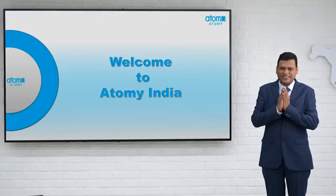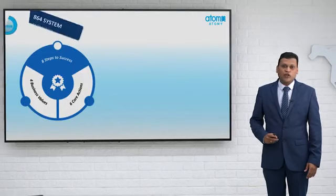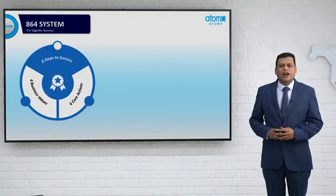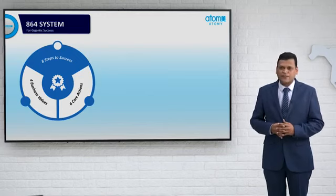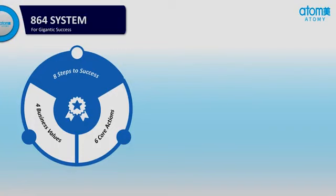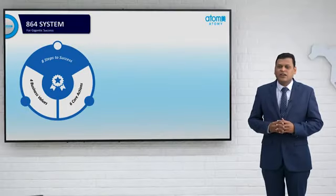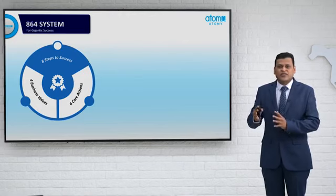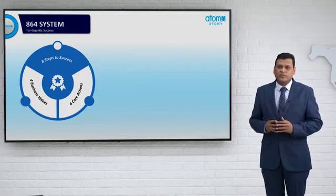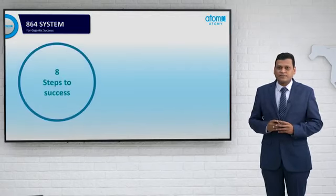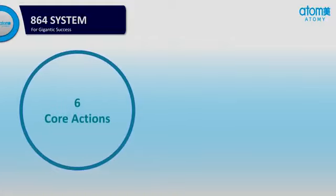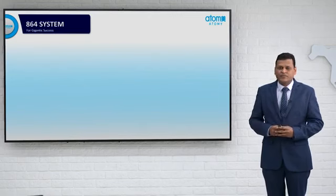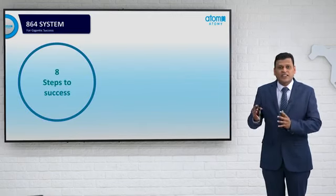Hello everyone, namaste. Let us see now about the 864 system. System, processes, formats, and SOPs are very important to develop our own business and these are proven tools for getting successful. So my request to everyone: please give some attention to this topic. In the 864 system, 8 means 8 steps to success, 6 means 6 core actions, and 4 means 4 business values.